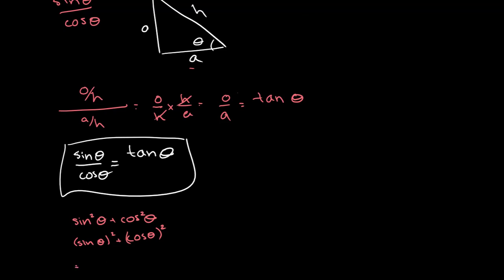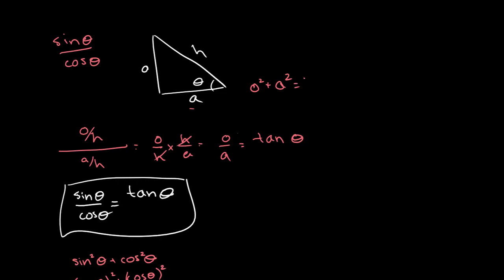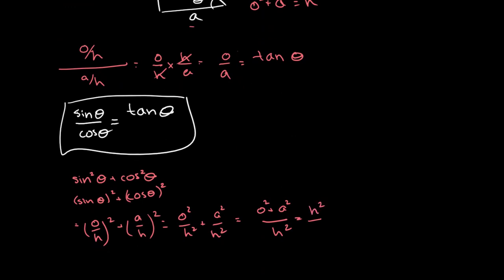This is equal to O over H whole squared plus A over H whole squared, which is equal to O squared over H squared plus A squared over H squared. Using the Pythagorean theorem, O squared plus A squared is equal to H squared, so this simplifies to give us sine squared of theta plus cosine squared of theta is equal to 1.